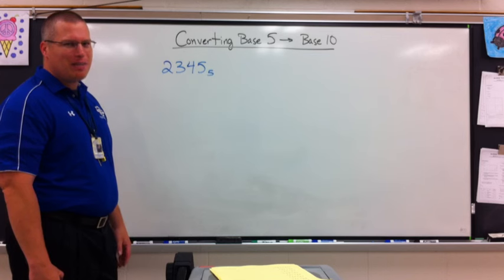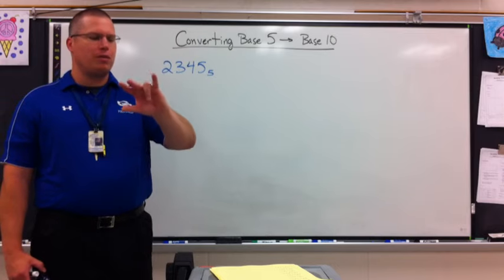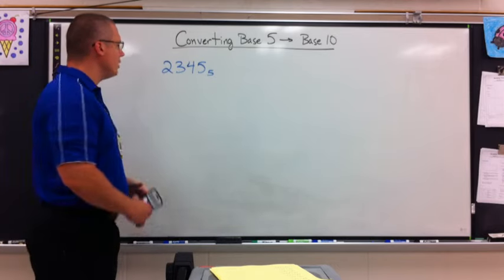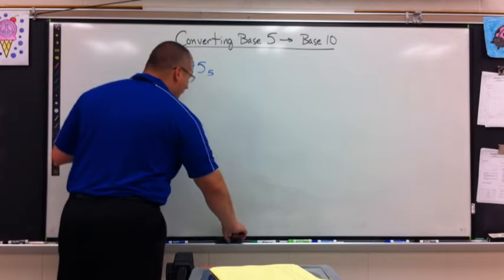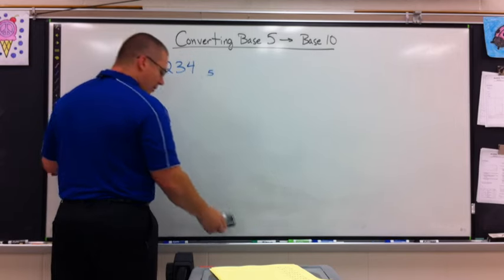What's the highest digit I'm allowed to use in base 5? Well, I'm allowed 5 digits: 0, 1, 2, 3, and 4. So 4 is the highest digit. What's wrong with this? What's wrong is there's a 5 in it. This is an illegal number. I can't even have that number. It's imaginary.